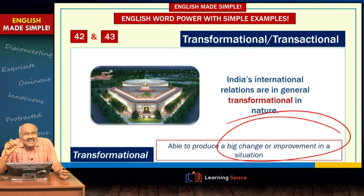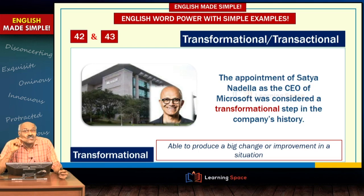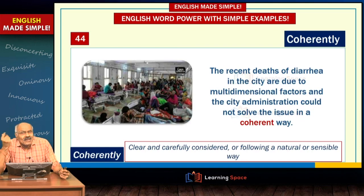Here is a Microsoft example: the appointment of Satya Nadella was considered a transformational step in the company's history. Prior to his appointment the company was struggling, and after his appointment there was a huge change — that's why you can say it was a transformational step which resulted in big change.